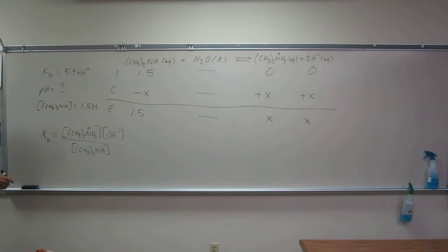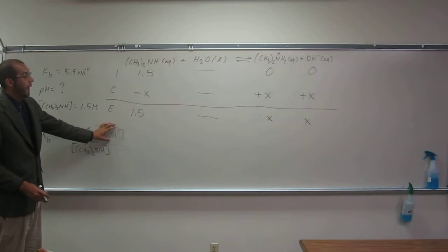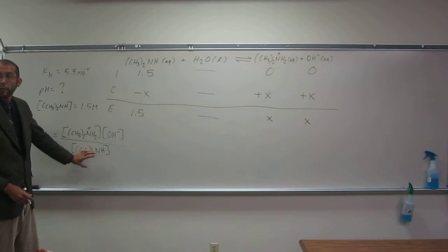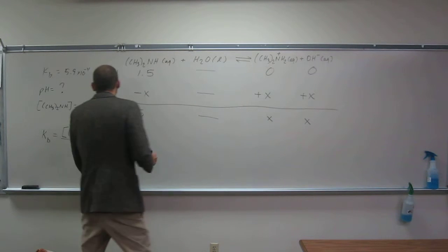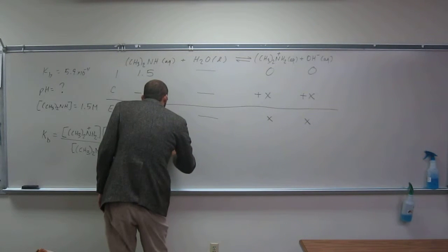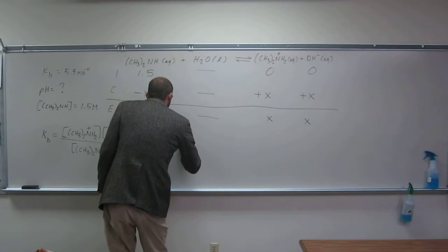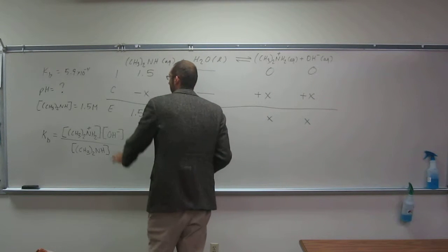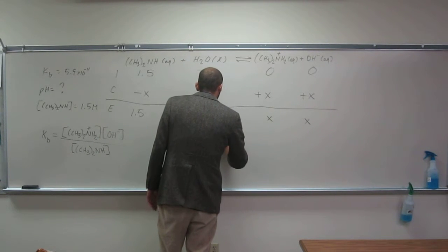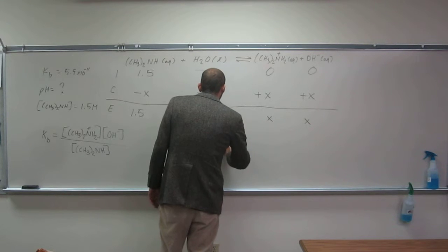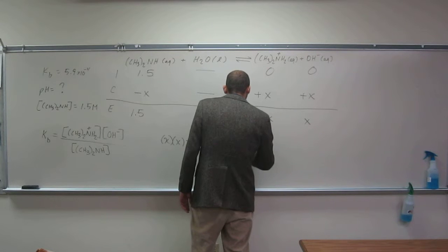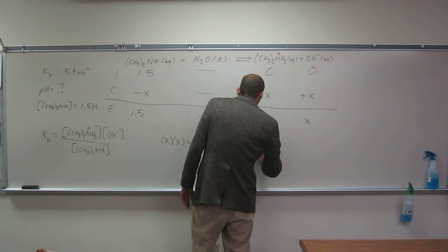So we can do that. We have the Kb here. So we've got x here, x here, 1.5 here, okay? Okay, so let's rearrange this thing. So x times x equals x squared, okay?